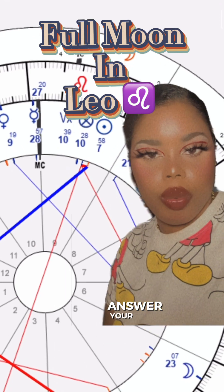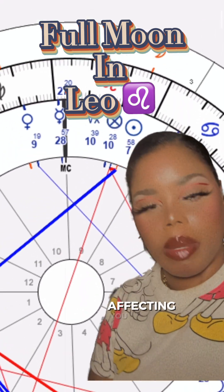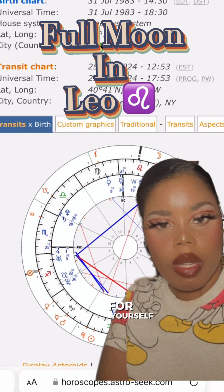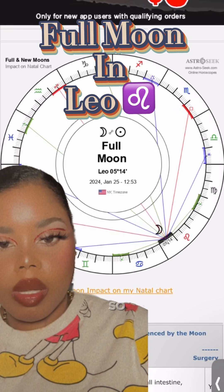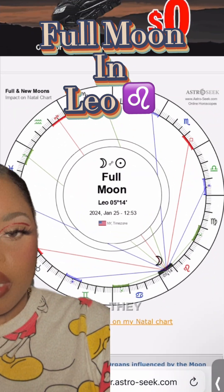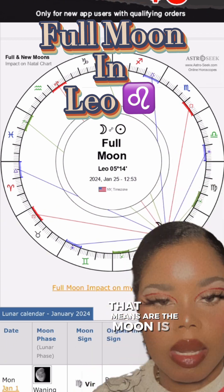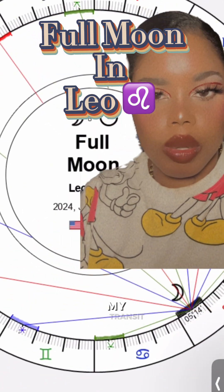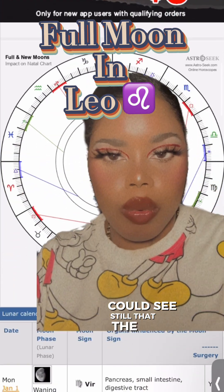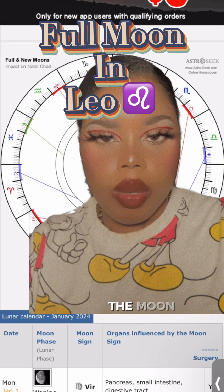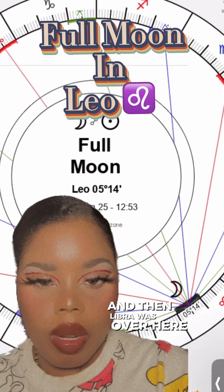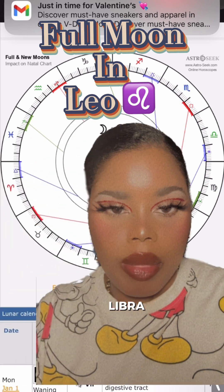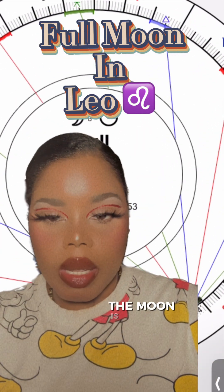I can't 100% answer your question about how this particular moon is affecting you because I can't see your natal chart, but you can use AstroSeek and see for yourself. You can see here the moon is sextile, and on my other chart you can see the transit was in the ninth house, with Libra over in the seventh house. Even on this chart, the moon is sextile Libra.